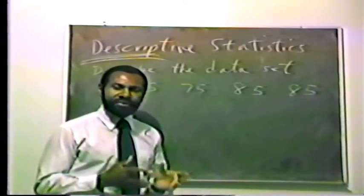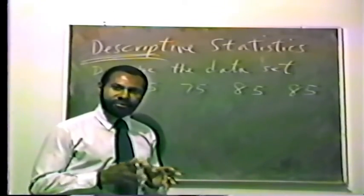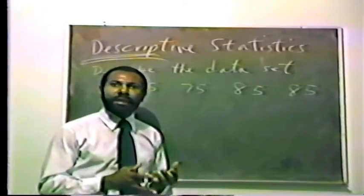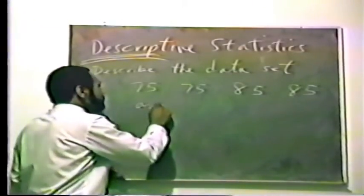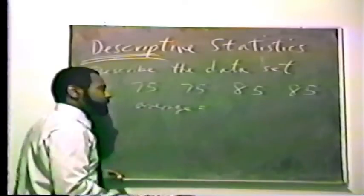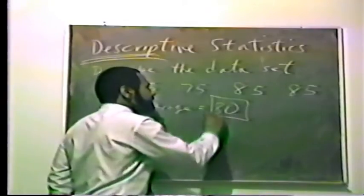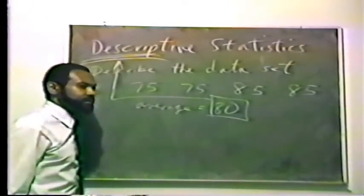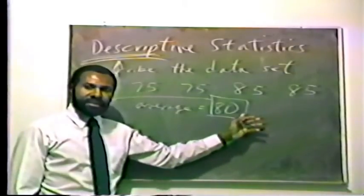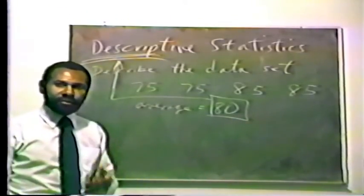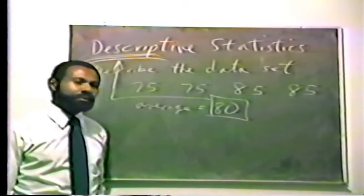We can come up with one descriptive statistic to describe this set of numbers. Usually that descriptive statistic is what we call a mean, or average. The average, or mean, of these test scores equals 80. This one number describes this data set — it is a descriptive statistic.